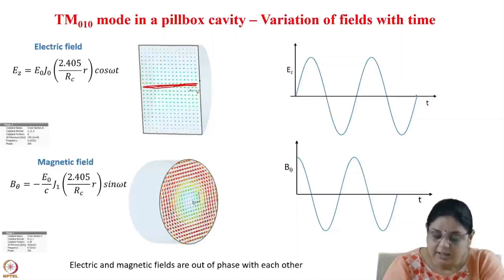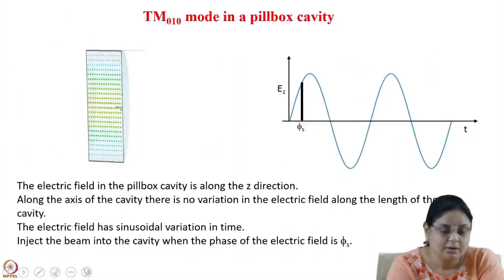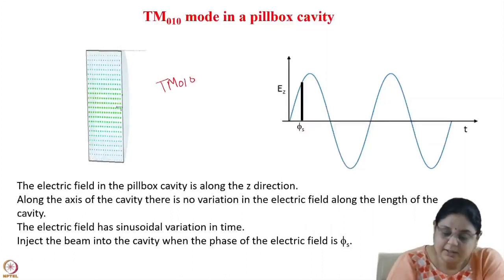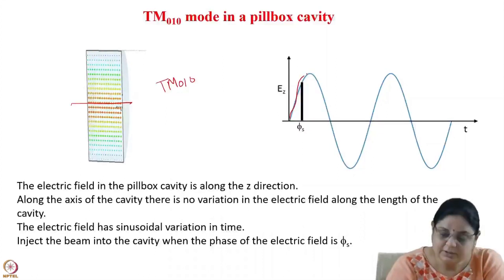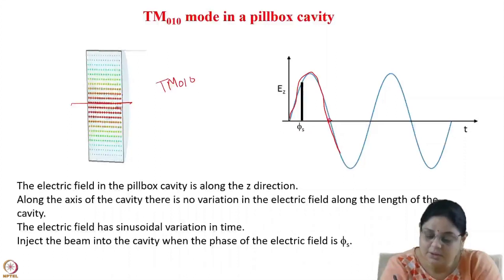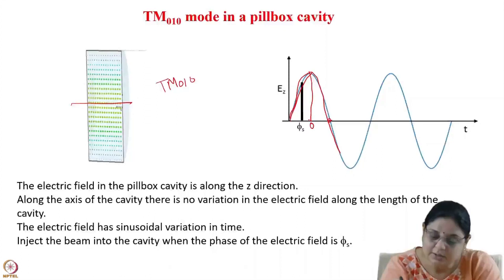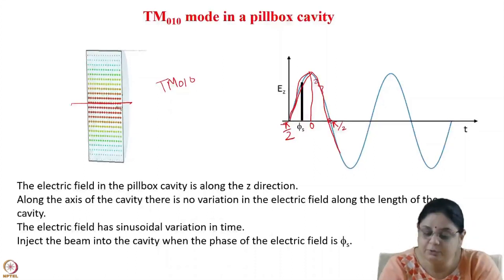The Ez field and B_theta field have this time variation. Since the electric and magnetic fields are out of phase with each other, their time variation differs accordingly. In a pillbox cavity in TM010 mode, the electric field is like this and there is also a magnetic field in the theta direction, but it is zero at the axis. The field varies with time and we can use this type of field pattern to accelerate charged particles. We need not use the whole positive cycle for acceleration because phase stability exists only in the region from minus pi by 2 to 0. From 0 to pi by 2 there is acceleration but no phase stability, so the synchronous phase must be chosen in this region.